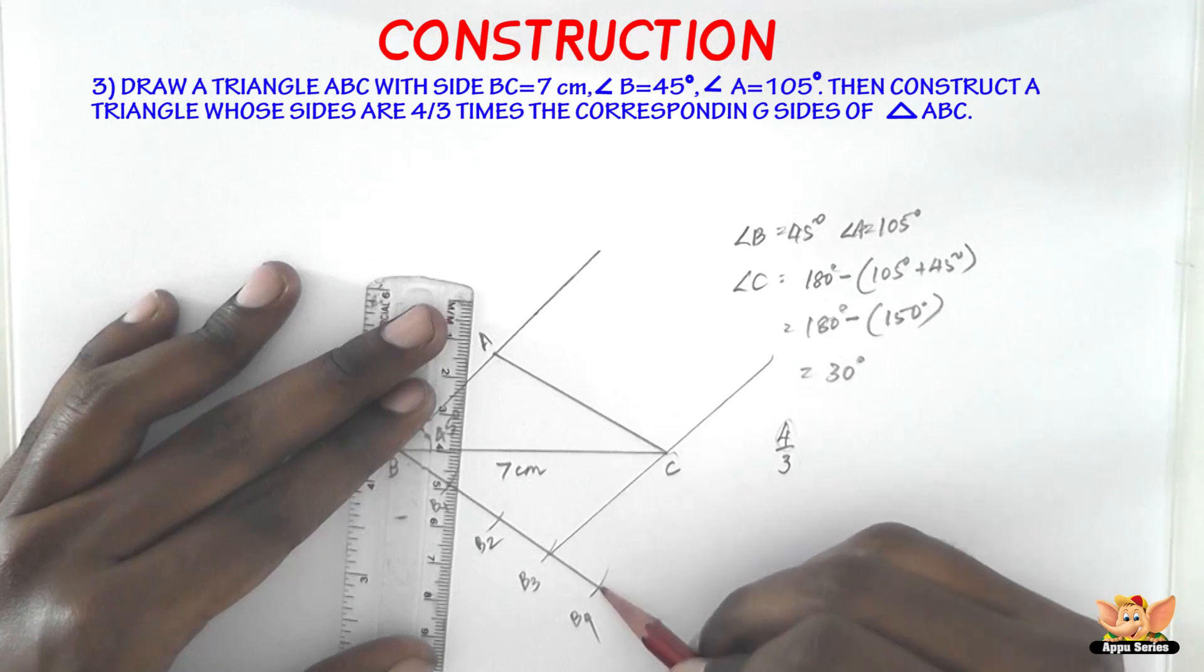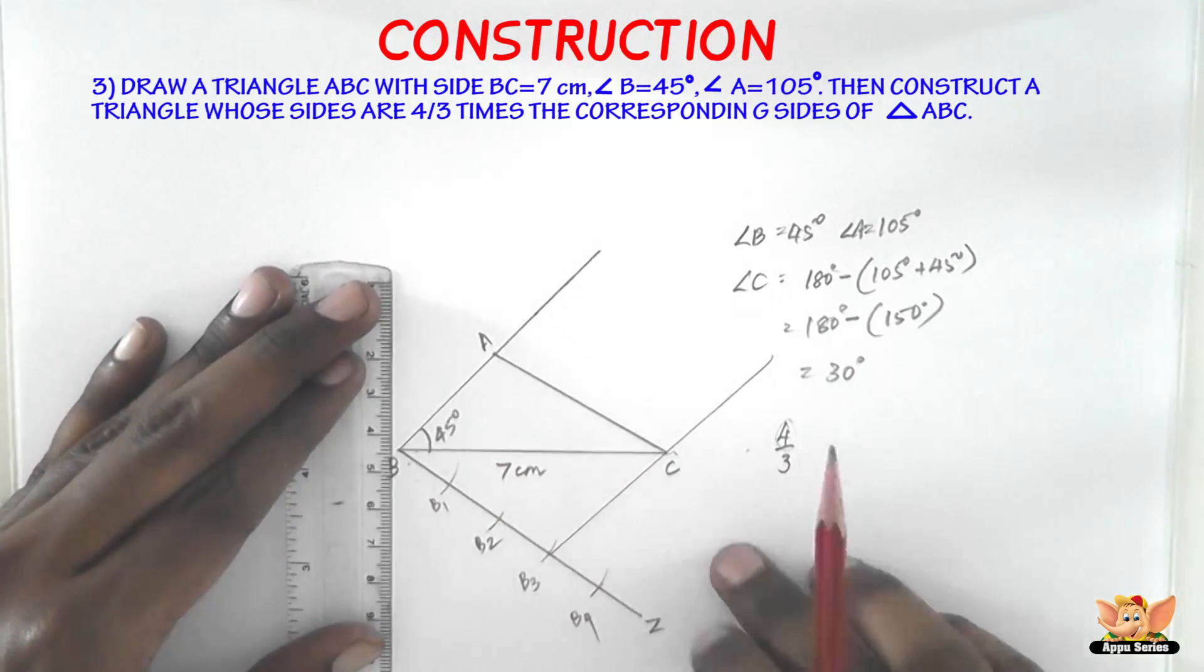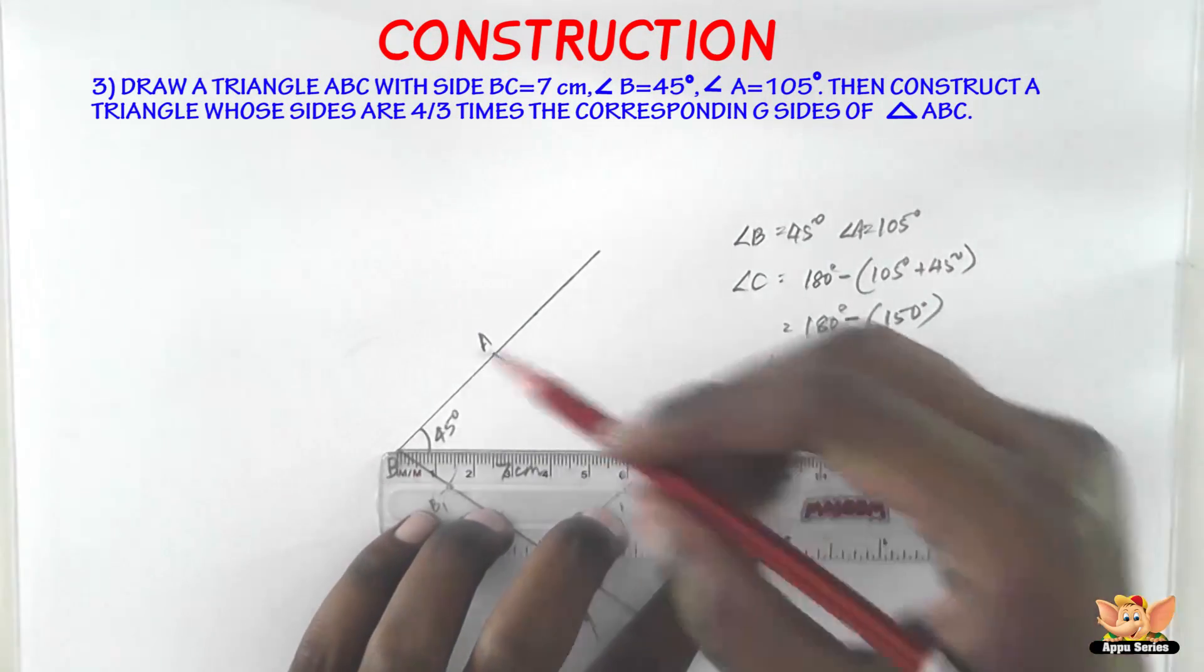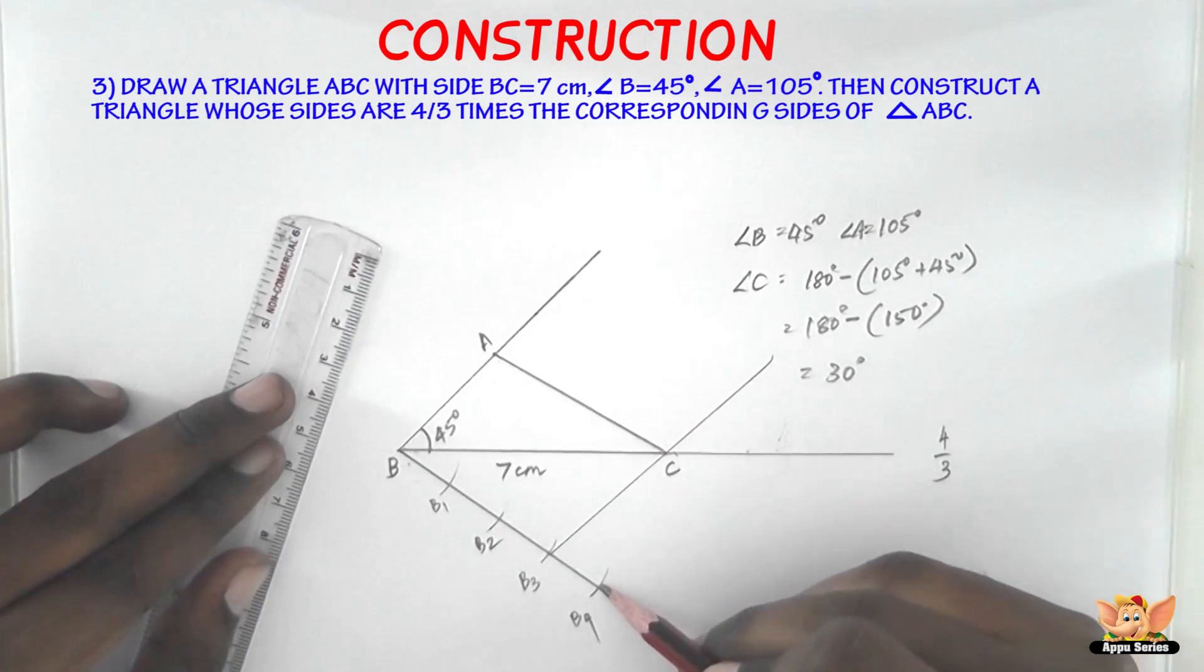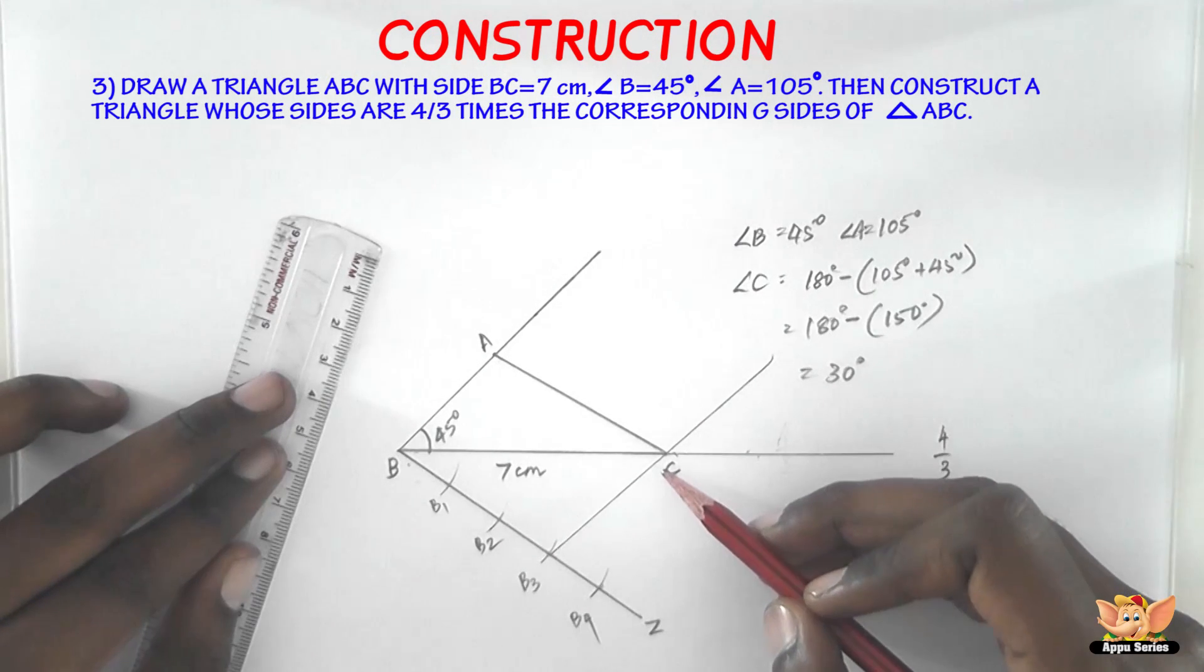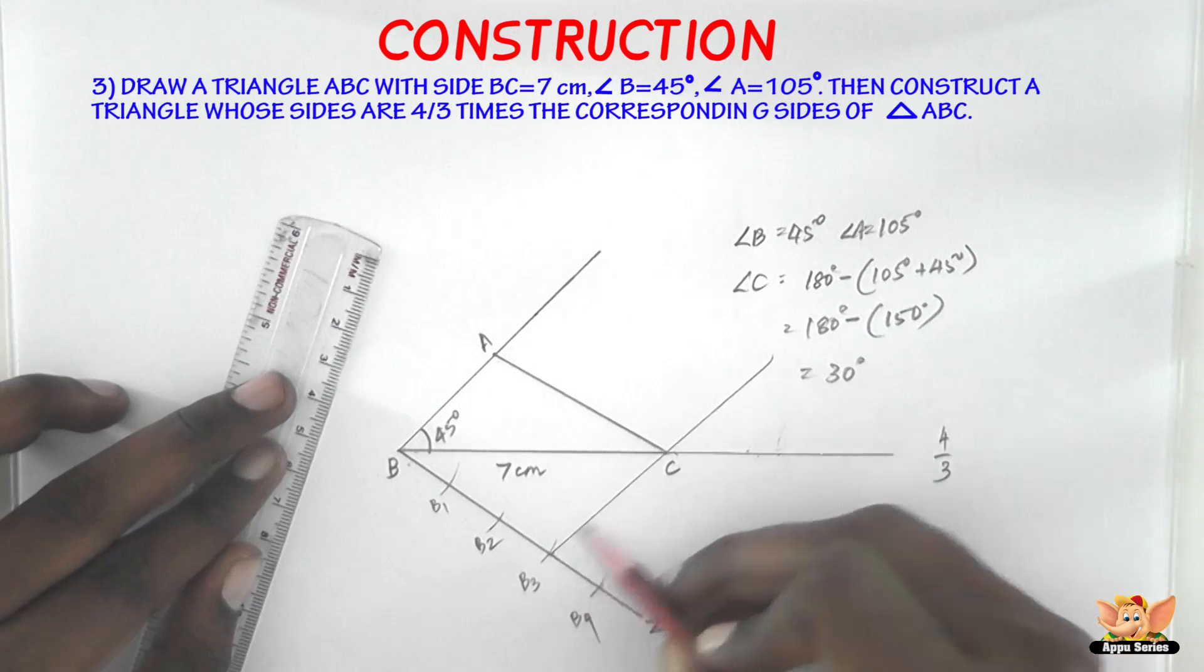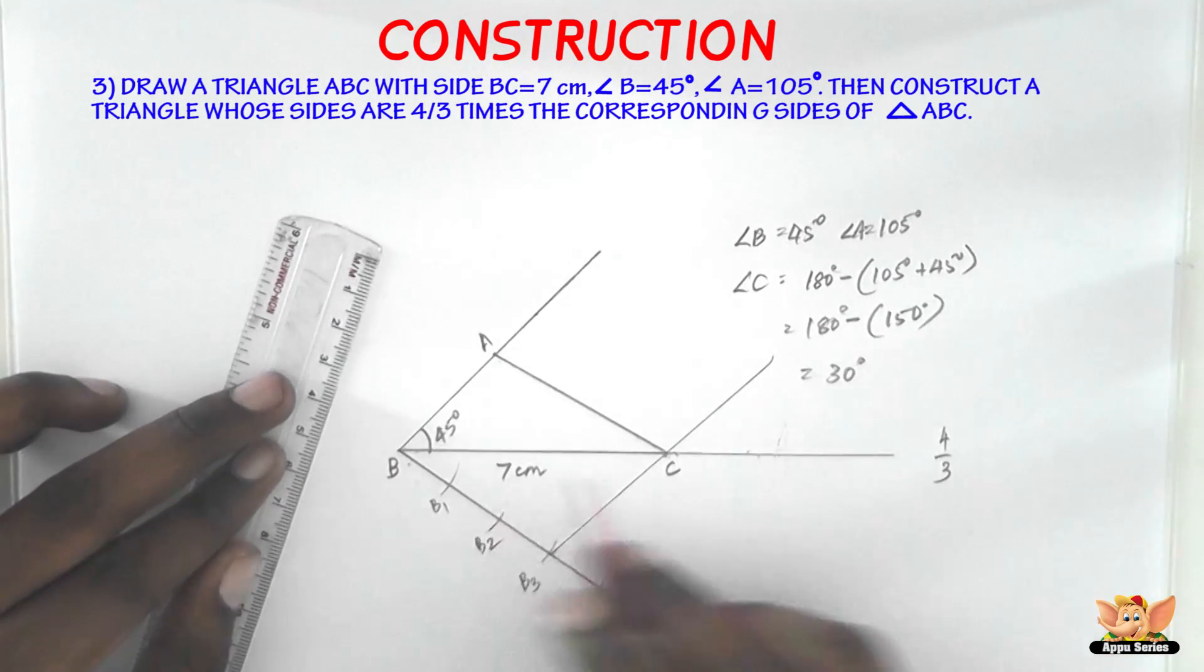Now also, we need to construct B4, a line from B4 to this line, an extension of BC. So let us draw the extension of BC. Let me extend this line BC. So yeah, here it is. So now I need to draw B4, say let us name this C dash. B4, C dash, such a way that it is parallel to B3, C. So if you want to make sure that B4, C dash is parallel to B3, C, then B4, C should make the same angle as B3, C with BZ or BC.